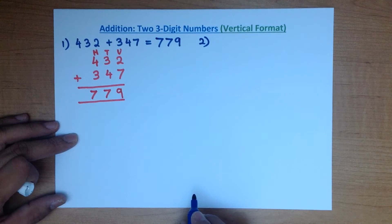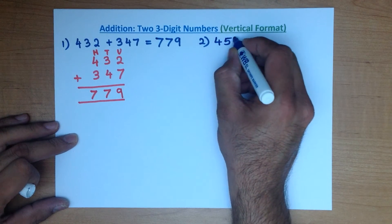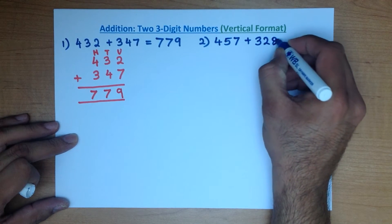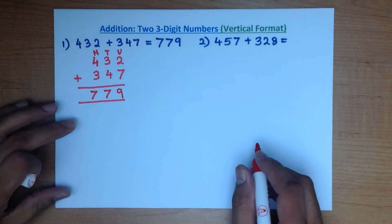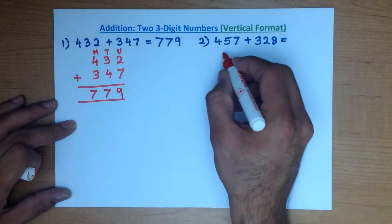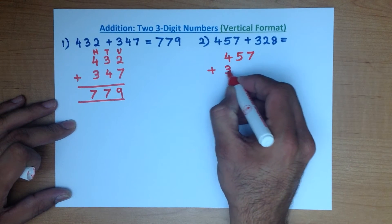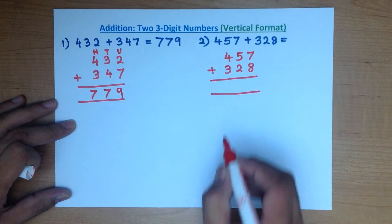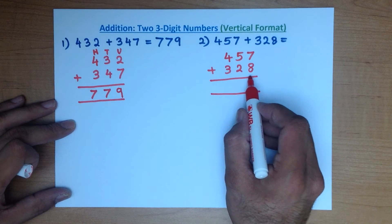We will now have a look at the second example. What is 457 plus 328? 457 plus 328. Let's write them down in the vertical format. 457 plus 328. We don't need to label them. Let's go through this, the column on the right hand side first.